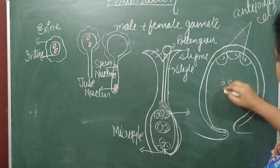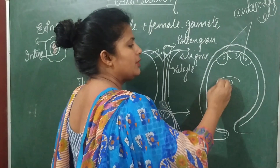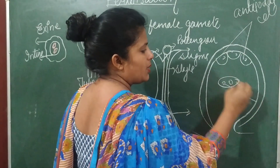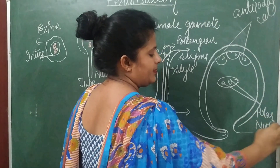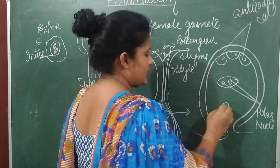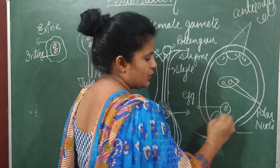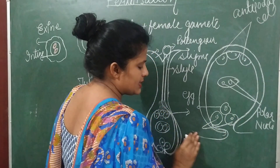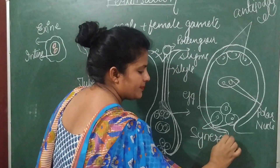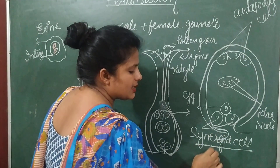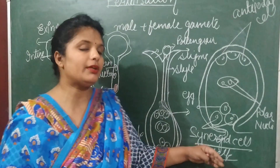In the center are two polar nuclei, and these polar nuclei form the endosperm nucleus. Here is the egg cell, and the egg cell is surrounded by two more cells — these are called synergid cells.